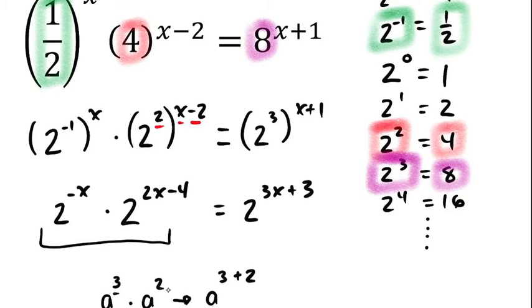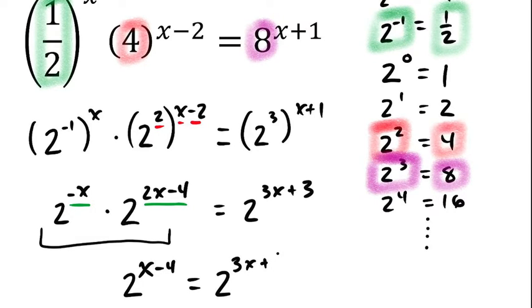So, just as I can add the three and two to get three plus two or five, I can add this negative x and this two x minus four and combine these two collection of factors. So, this is going to become two to the x minus four power. That's beautiful. And on the other side, that's the same as two to the three x plus three power.